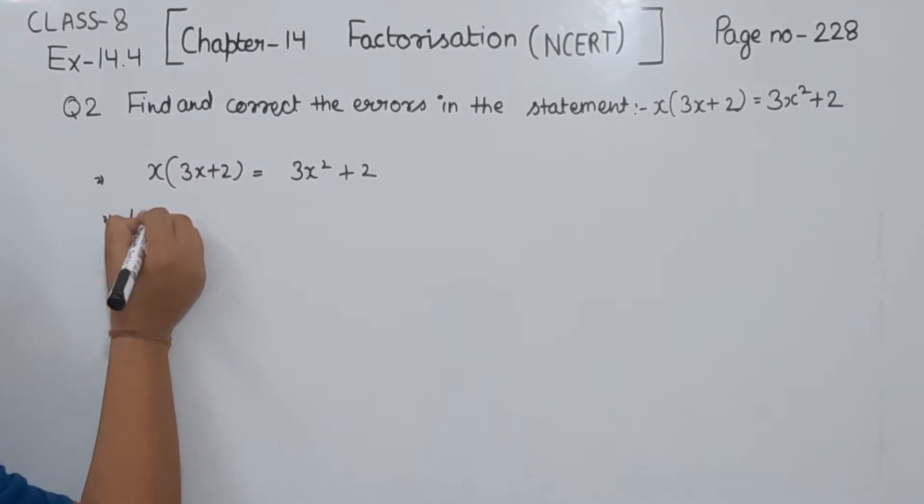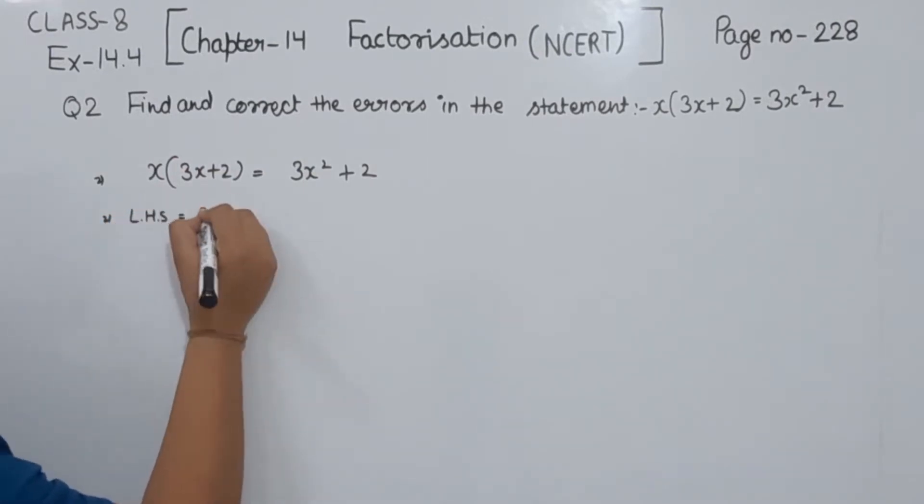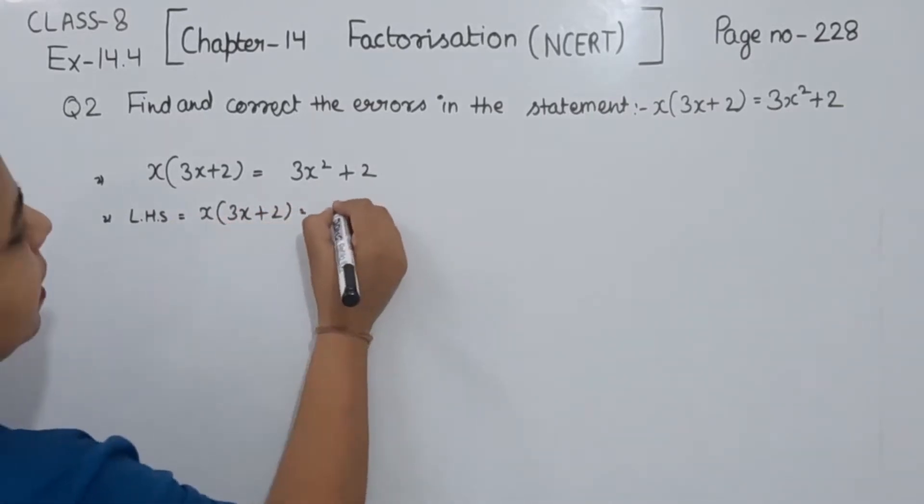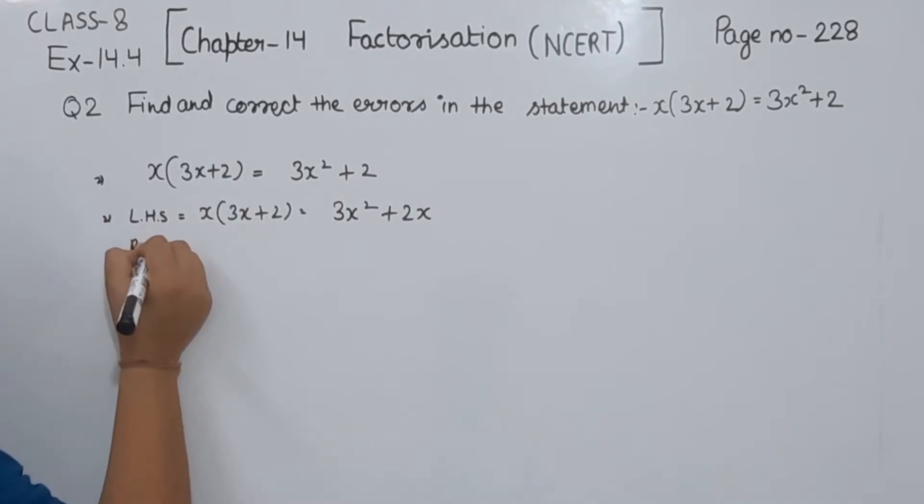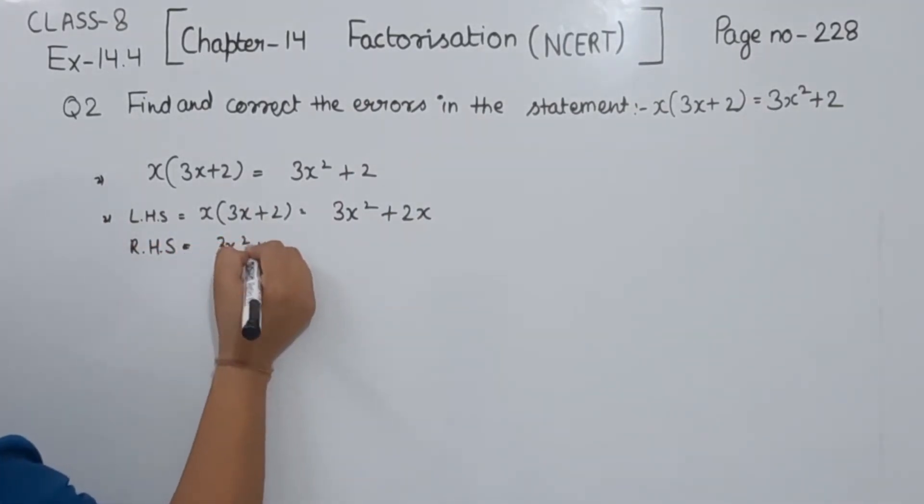Now first of all, we are going to take the left hand side. We have x multiplied by 3x plus 2, so when we multiply we get 3x squared plus 2x. And the right hand side we have as 3x squared plus 2.